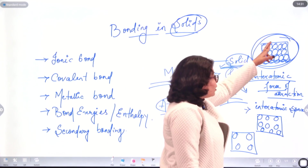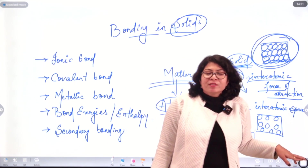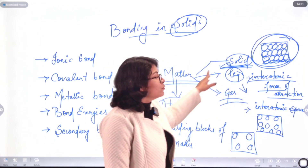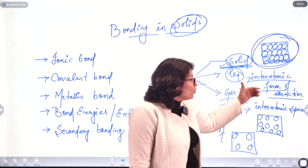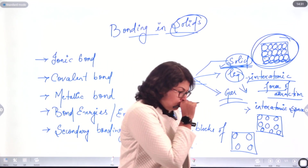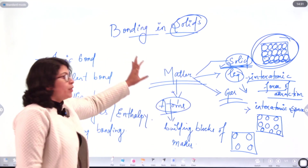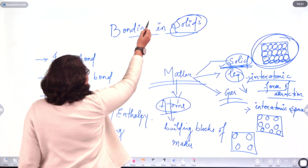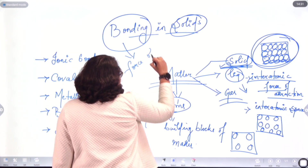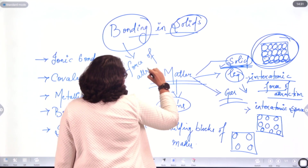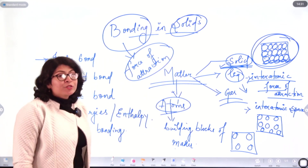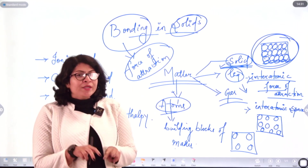In case of solid compared with liquid and gas, the interatomic force of attraction is very high, and it goes on decreasing as we move down to liquid and to gases. Now, what do you mean by bonding? Bond means force of attraction. Bonding simply means force of attraction — between any two entities which are closer together. The closer proximity is the most important factor for bonding.